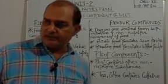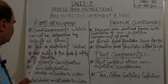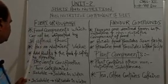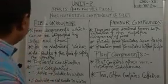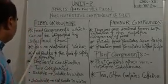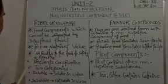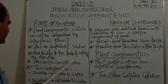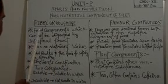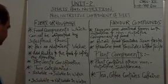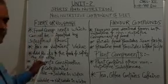First, we will see what are fibers or roughage. These are food components which cannot be digested by the intestinal tract. Second, fiber has no nutritive value. Third, it adds bulk to the food and satisfies the appetite. Fourth, it prevents constipation. Fiber and roughage are divided into two categories.